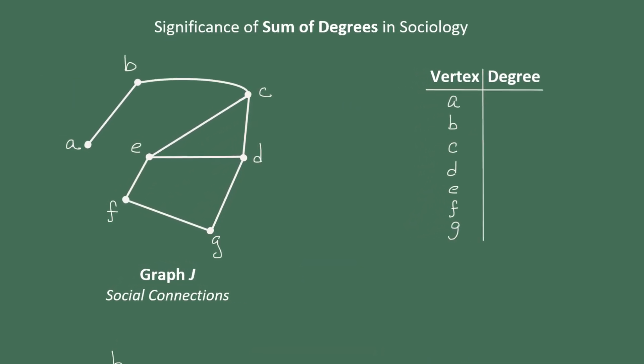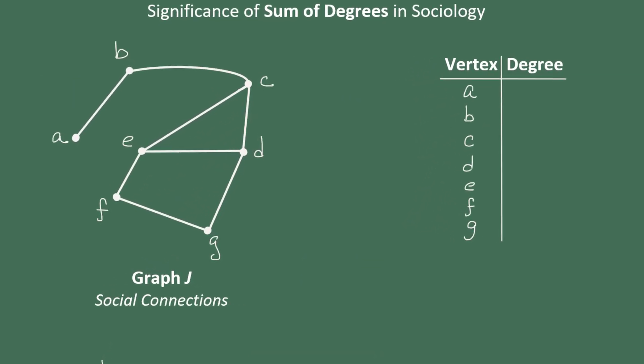Now let's suppose that we drew a graph to represent the social connections amongst a group of seven individuals. Let's start by finding the degrees of each vertex. Vertex A is in contact with only one edge, so it has degree one.